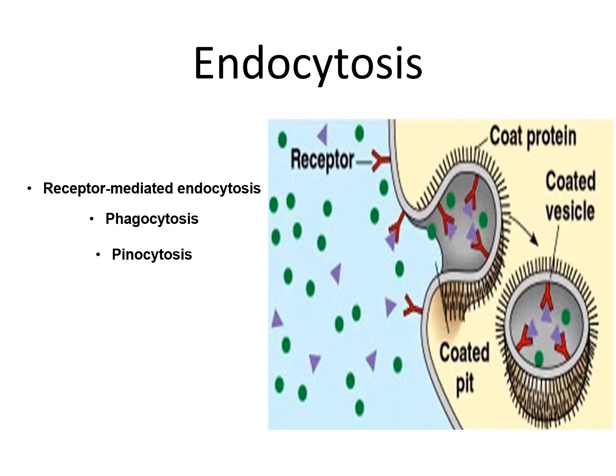The final topic is endocytosis. Endocytosis is a type of active transport that moves large particles or volumes of liquid into a cell. Various forms of endocytosis exist but share similar characteristics: the plasma membrane invaginates around the particle, and this section is then cut off, forming a vesicle within the cell. There are three types of endocytosis: receptor-mediated endocytosis, phagocytosis, and pinocytosis.